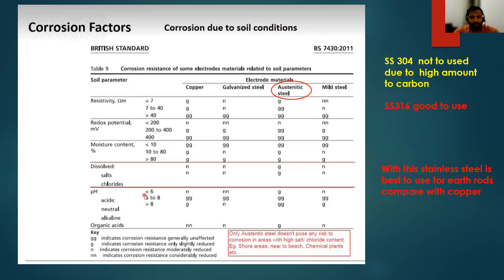Copper will be N if less than 6. If the earth resistance is acidic nature less than 6, N for copper, galvanized is N, austenitic steel is G which is better, and mild steel N. For 6 to 8, everything is good because this 6 to 8 is a normal condition. Greater than 8, then copper is good, galvanized is little good, austenitic steel is very good (GG), and mild steel also good.